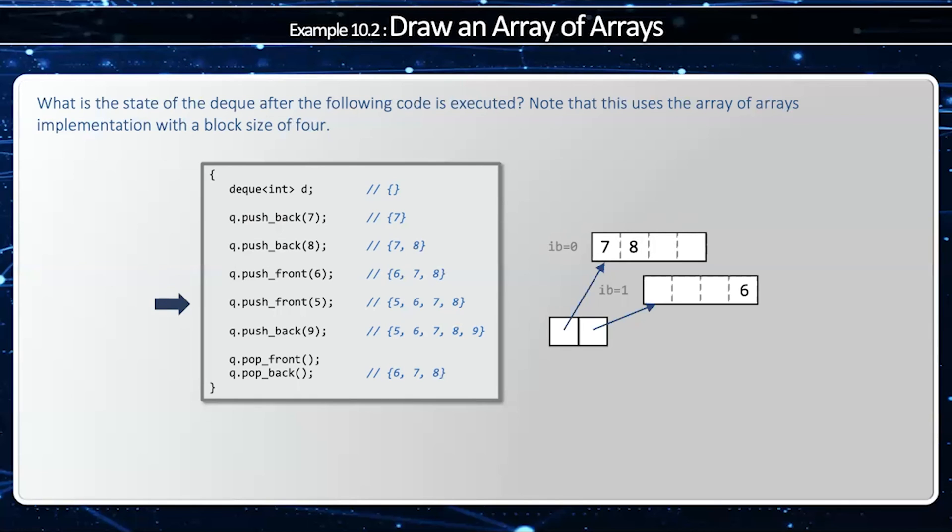Okay, when I push front 5, there's a space in front of the 6, so I get the 5. When I push back 9, there's space after the 8, so I get the 9. When I say pop front, then I'm going to take the 5 off. When I say pop back, I'll take the 9 off, and that leaves me with a final state of my deque.